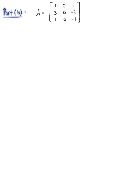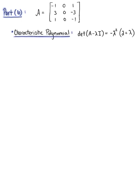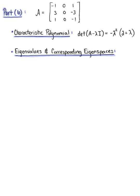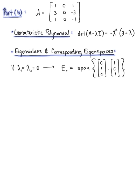In part B, we use the diagonalization theorem to determine if this 3 by 3 matrix A is diagonalizable. Since we've already looked at this matrix in detail, let's recall what we've already determined. We found that the characteristic polynomial was defined as −λ² (λ + 2). We also found the eigenvalues lambda sub 1 equals lambda sub 2 equals 0, with the corresponding eigenspace E sub 0 equal to the span of the vectors (0, 1, 0) and (1, 0, 1).